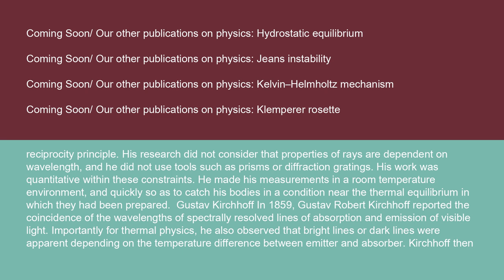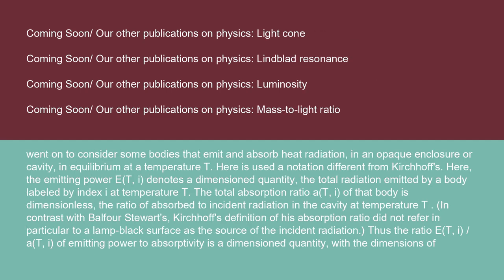Gustav Kirchhoff in 1859 reported the coincidence of the wavelengths of spectrally resolved lines of absorption and emission of visible light. Importantly for thermal physics, he also observed that bright lines or dark lines were apparent depending on the temperature difference between emitter and absorber. Kirchhoff then went on to consider some bodies that emit and absorb heat radiation in an opaque enclosure or cavity in equilibrium at a temperature T.